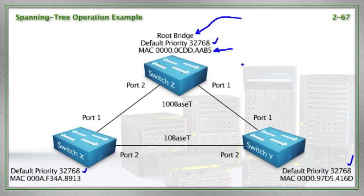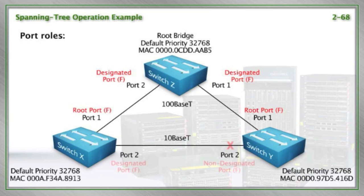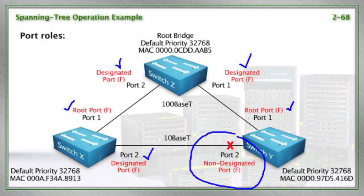What is the second part of this equation? Well, we've got our root bridge. By default, as you know, all of the ports on the root bridge are designated. Spanning tree goes to each non-root bridge and does a root port selection. We come up with a designated port on each segment, and whatever is left over is non-designated.